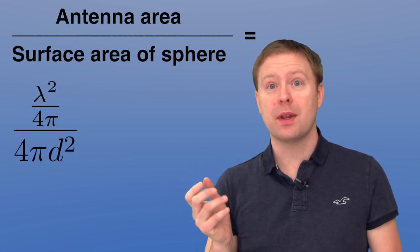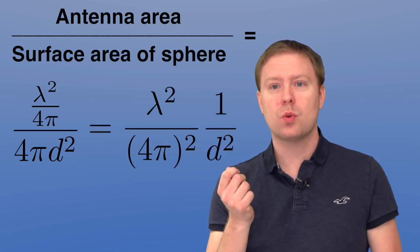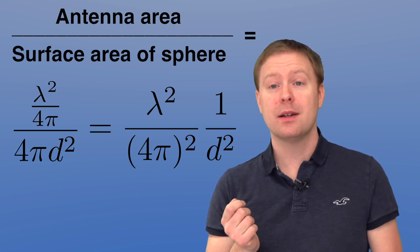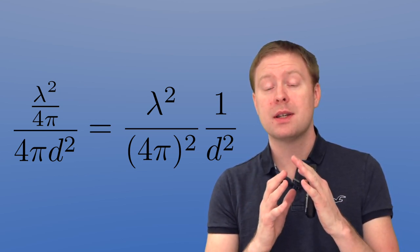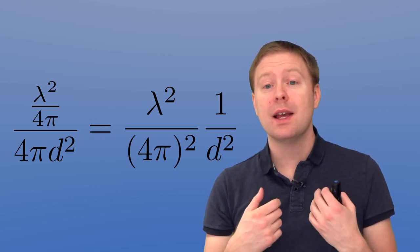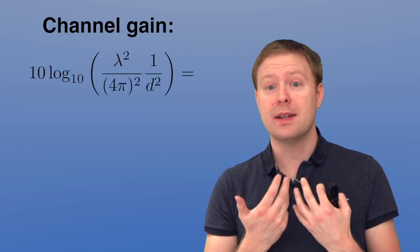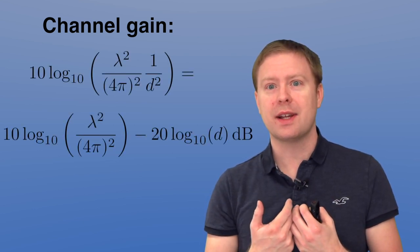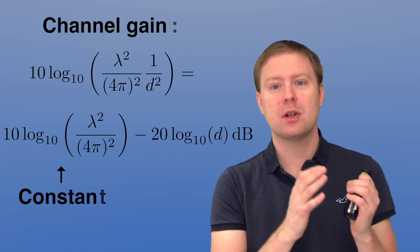If you take the ratio between these two different things, what you will see is that you get something that is a constant term lambda squared divided by 4 pi to the power of 2, and then you have 1 over d squared. So the transmit power is spreading out with the distance in a squared manner, and very quickly as you increase your distance you get something that is very small here. Therefore we also like to measure these things that we call the channel gain in decibel scale. So you take the 10 log 10 of this channel gain and then you get one constant term and then you get the minus 20 times log 10 of the distance.